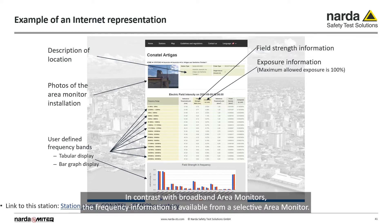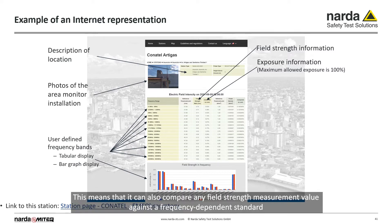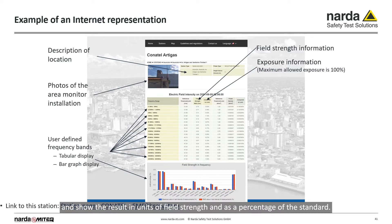In contrast with broadband area monitors, the frequency information is available from a Selective Area Monitor. This means it can also compare any field strength measurement value against a frequency-dependent standard and show the result in units of field strength and as a percentage of the standard.